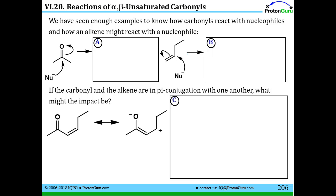We've seen enough examples to know how carbonyls react with nucleophiles and how an alkene might react with a nucleophile. Specifically, the polar bond of a carbonyl leads to the nucleophile being attracted to the carbon of that site. And in that way, you can do a nucleophilic addition to the carbonyl. We've seen this so many times throughout the course already.